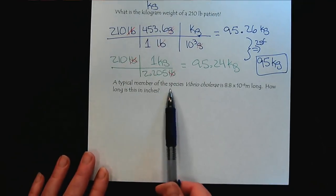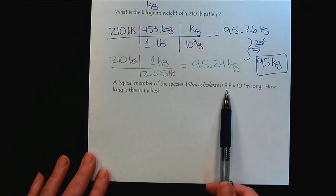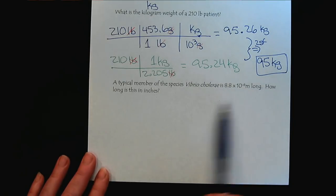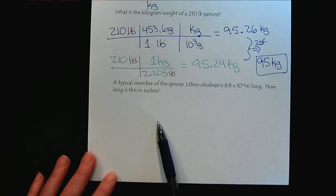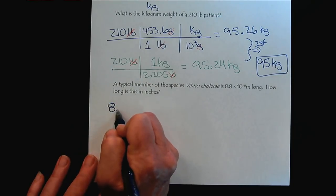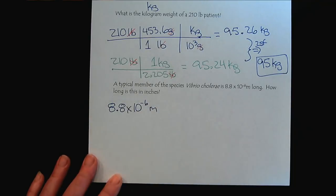Let's practice one more. A typical member of this species, Vibrio cholera, is 8.8 times 10 to the minus 6 meters long. How long is this in inches? So now we're going to take advantage of our distance bridge. So start with what we know. We know we have 8.8 times 10 to the minus 6 meters.